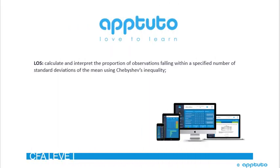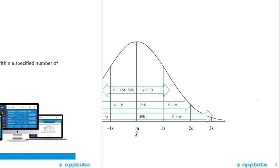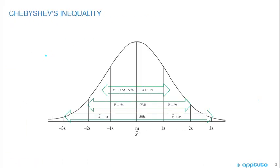This LOS is calculate and interpret the proportion of observations falling within a specified number of standard deviations of the mean using Chebyshev's inequality. I just put this little chart in and of course that looks like the normal curve and it is and Chebyshev's inequality is referring to any distribution, not just a normal distribution.